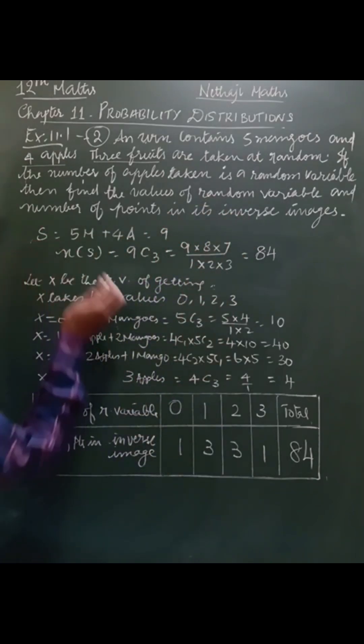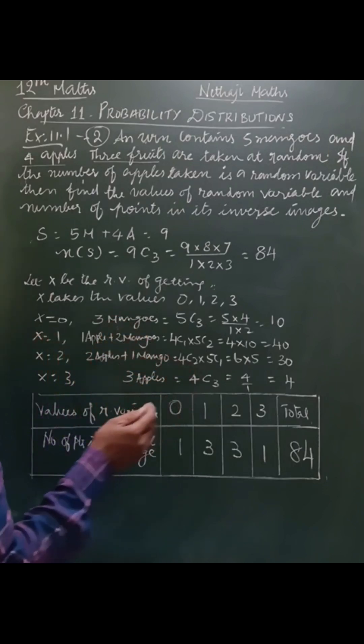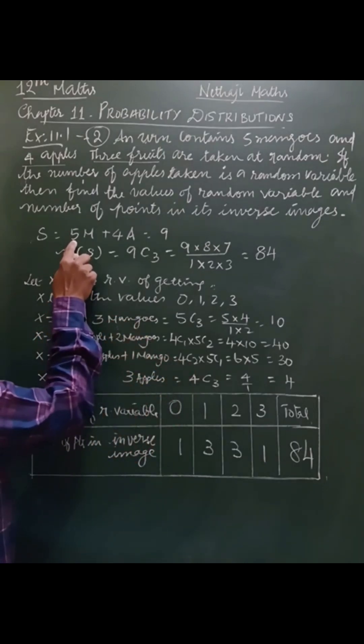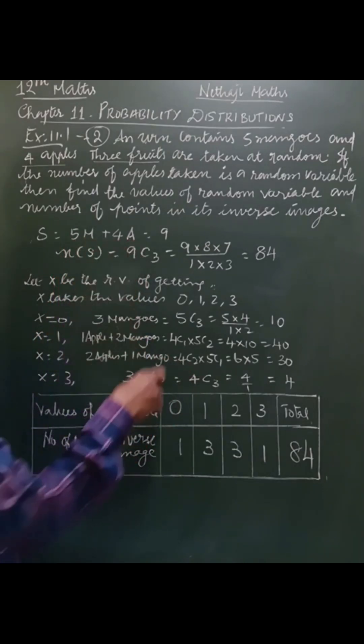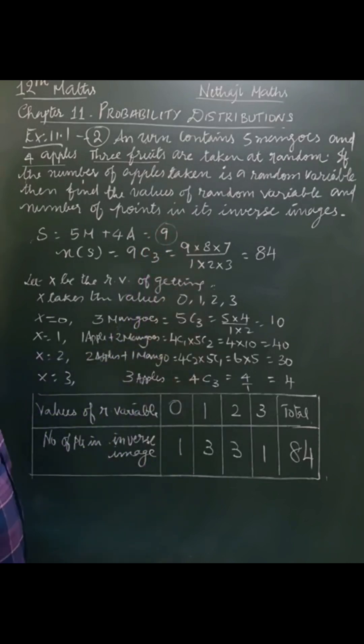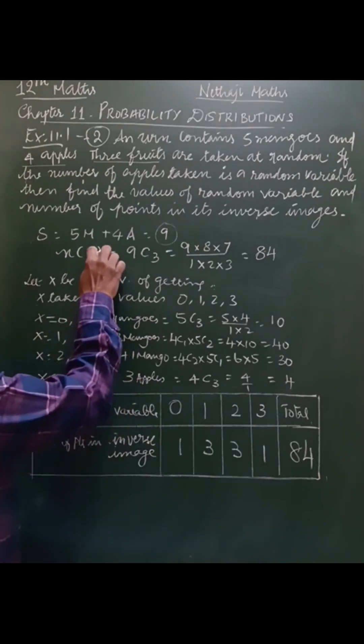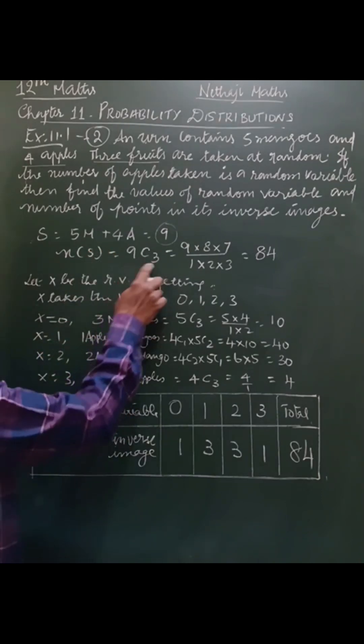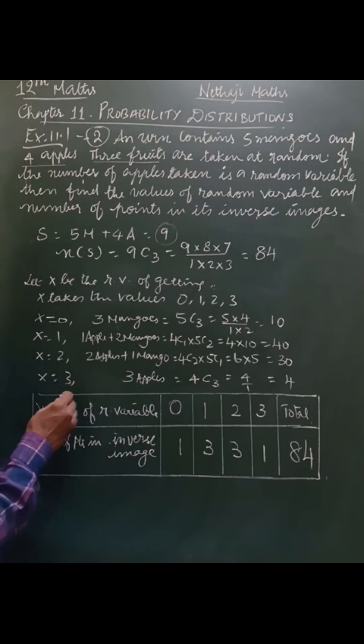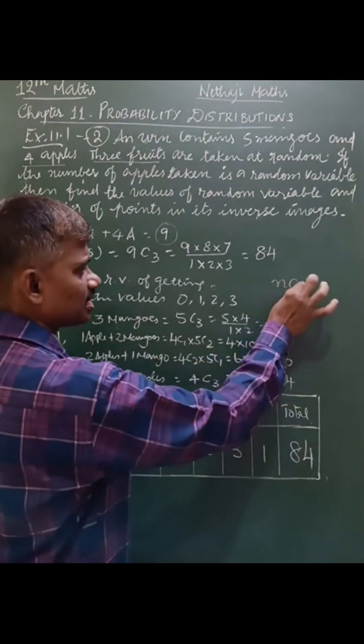So in the urn, 5 mangoes and 4 apples are there. Total fruits are 9 fruits. From that 9 fruits, I have to take 3 fruits. First we will select 3 fruits. So sample space is 9C3. Here we have to use the combination formula, that is NCR.